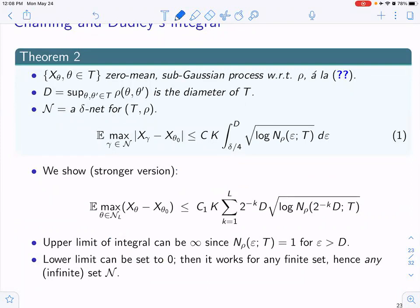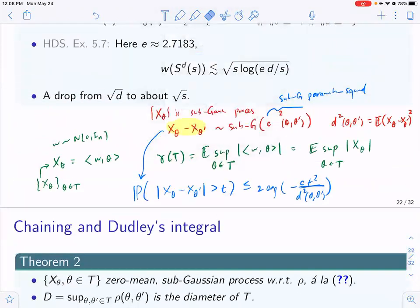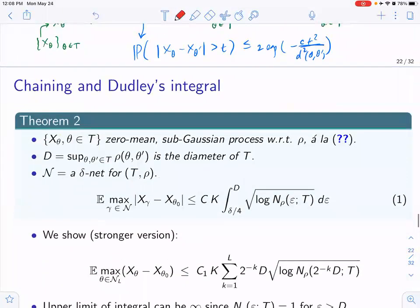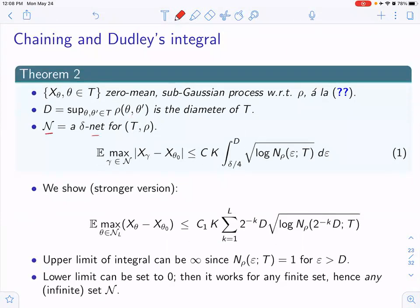Now suppose you have a zero-mean sub-Gaussian process, D is the diameter of the set, and N is a delta net for the set. The result is that the expected maximum over theta in N of X_theta minus X_{theta_0} (a fixed reference point) is bounded by the Dudley integral. For the linear Gaussian process case, this corresponds to the maximum of w^T*(theta - theta_0) over the net, which aligns with the centered set Theta - theta-star from before.